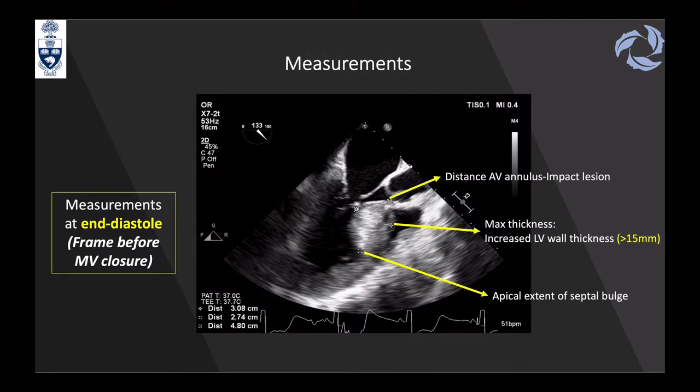Three key measurements are required for surgical planning and should be taken at end diastole, the frame before mitral valve closure. First: the distance from the aortic valve annulus to the impact lesion—the area where the anterior mitral leaflet contacts the septum—which tells the surgeon how far to extend the myectomy. Second: the maximum septal thickness at the impact lesion, indicating how deep the surgeon can cut.